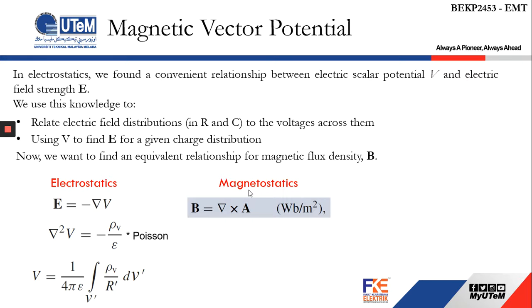The equivalent to Poisson's equation is this equation here. It defines the relationship between the magnetic vector potential with the current density J.